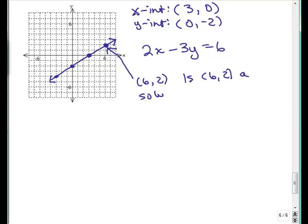Well, let's see. 2 times 6 minus 3 times 2. Does that equal 6? Remember how we do that? We plug in 6 for x, 2 for y. 12 minus 6 equals 6. Yep. So, this looks like the correct line. 2x minus 3y equals 6.